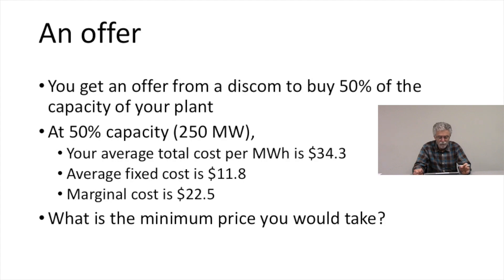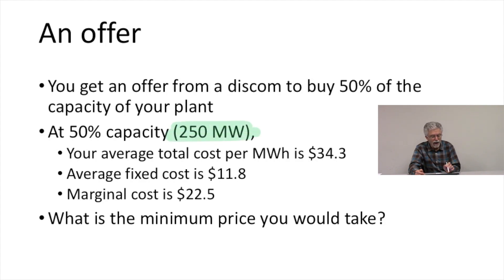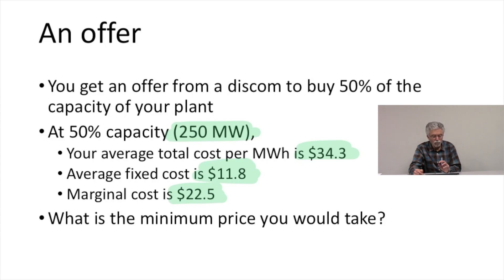Let's suppose you get an offer from a DISCOM to buy 50% of the capacity of your plant. At 50% capacity that's 250 megawatts. At 250 megawatts, your average total cost per megawatt hour is $34.30, the average fixed cost is $11.80, and the marginal cost is $22.50. So the question is: what is the minimum price you would take to supply this 50% power from this plant?